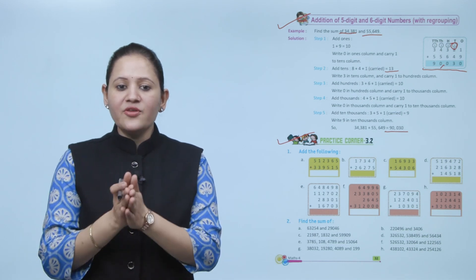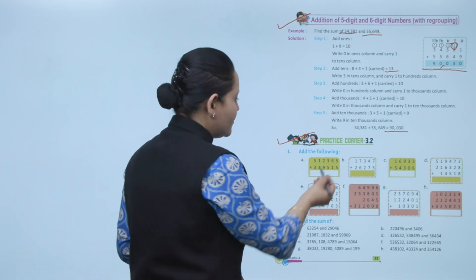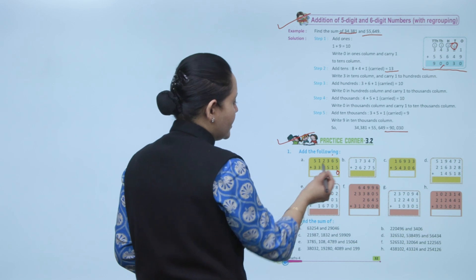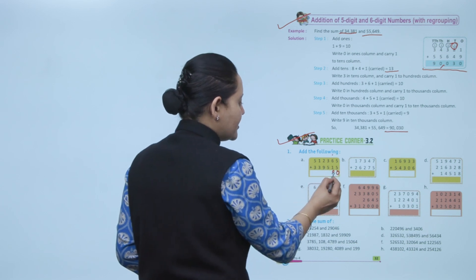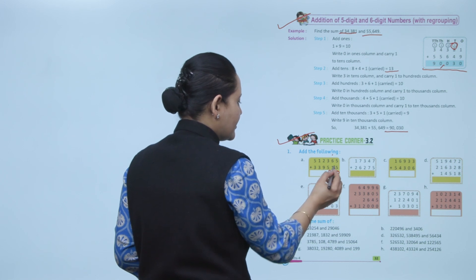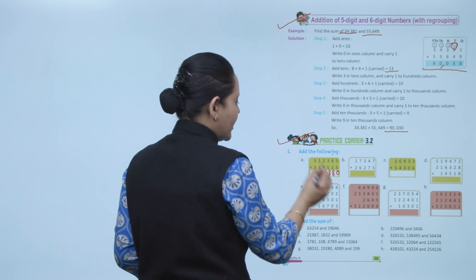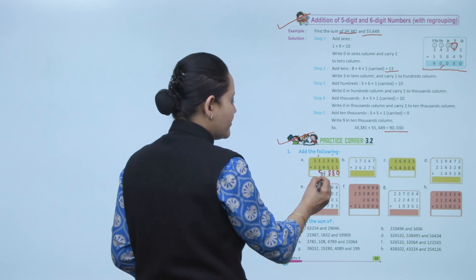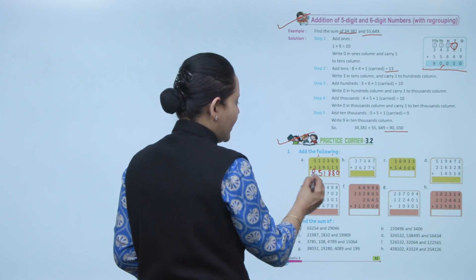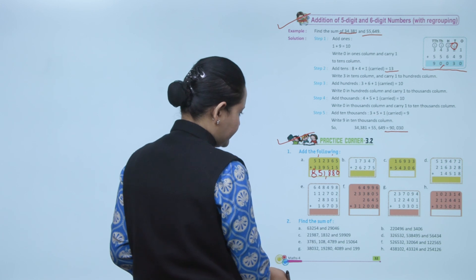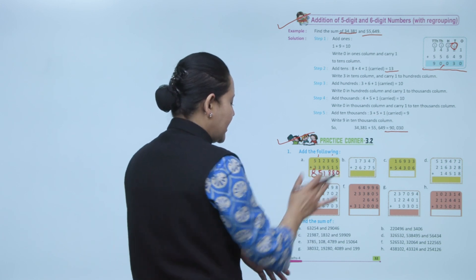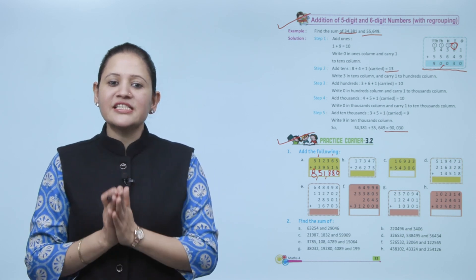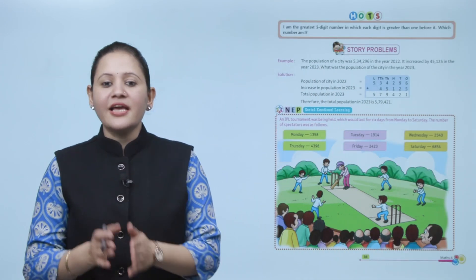Next is Practice Corner 3.2. Add the following: start from ones, 5 plus 5 is 10, write 0 carry 1. Then 6 plus 1 is 7, plus 1 is 8. 5 plus 3 is 8. 9 plus 2 is 11, write 1 carry 1. 3 plus 1 is 4, plus 1 is 5. 5 plus 3 is 8. The answer is 8,51,880. You have to practice all the questions of this exercise.